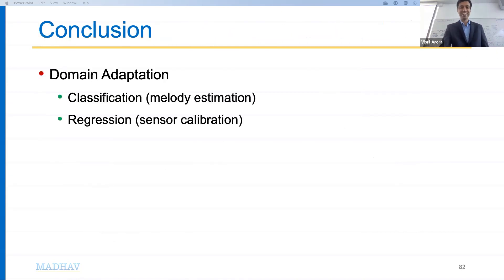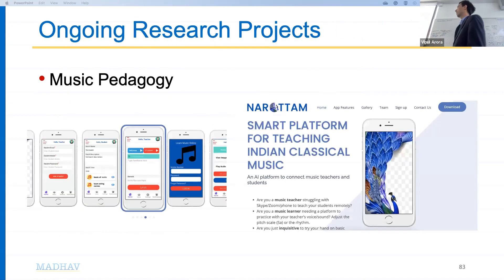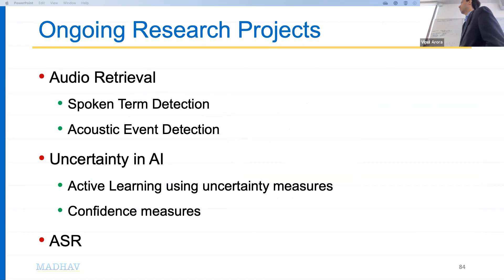To summarize: we covered domain adaptation for classification and regression, generative modeling, and audio search. Ongoing projects include music teaching for Indian classical music, audio retrieval with All India Radio and Doordarshan, active learning with uncertainty measures for acquisition functions, and automatic speech recognition.